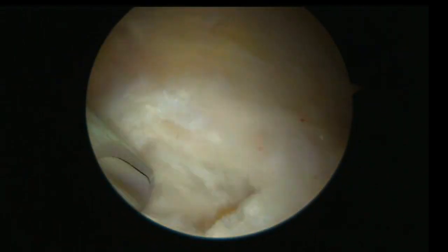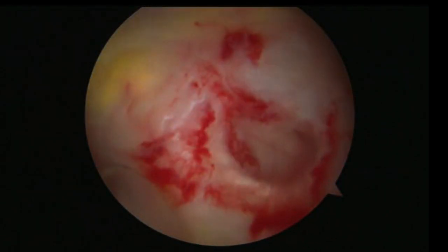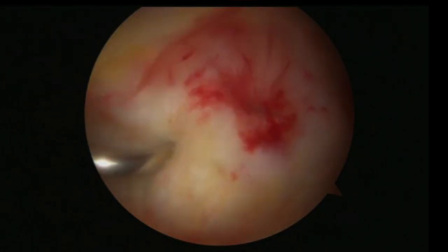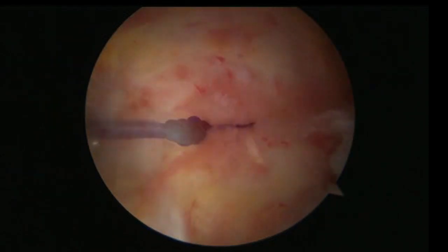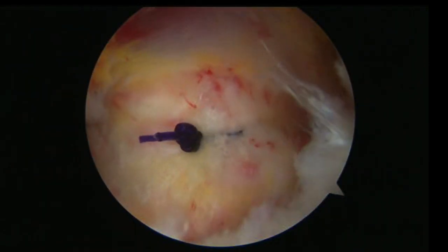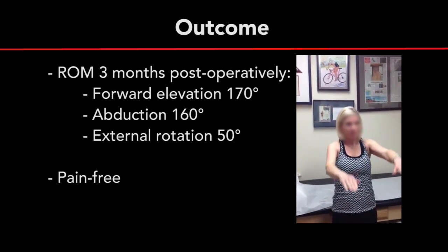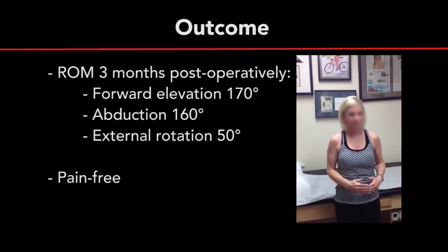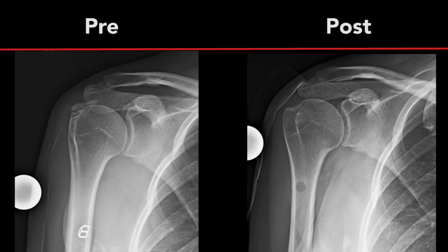Following excision of the calcification, a small but complete full-thickness tear of the supraspinatus tendon remained. The majority of the footprint on the greater tuberosity was left intact, and therefore the decision was made to perform a side-to-side repair of the interstitial split of the supraspinatus tendon. Three months postoperatively, the patient demonstrated full active and passive range of motion and was completely pain-free. The AP radiograph demonstrates complete excision of the calcific tendinitis.